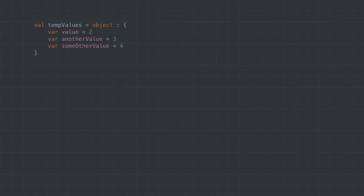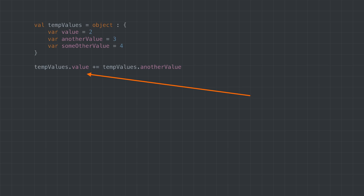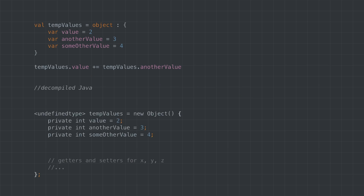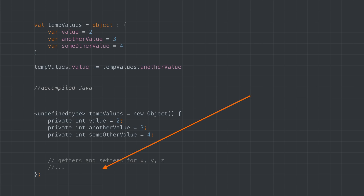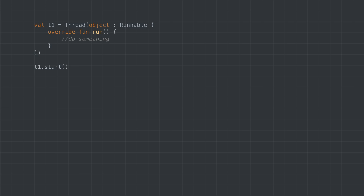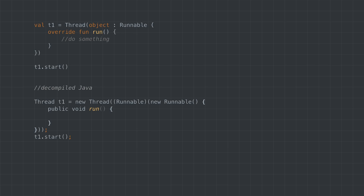So far, we've seen the object keyword used in object declarations. The object keyword can also be used in object expressions. When used as an expression, the object keyword helps you create anonymous objects and anonymous inner classes. For example, if you need a temporary object to hold some values, you can declare and initialize your object with the desired values on the spot and access them later. In the generated code, this translates into an anonymous Java class with an undefined type to store the anonymous object, with generated getters and setters. The object keyword also helps you create anonymous classes without writing any boilerplate code — you can use an object expression, and the Kotlin compiler generates the wrapper class declaration to create the anonymous class.